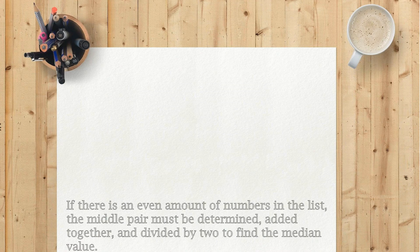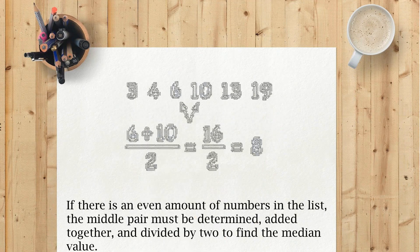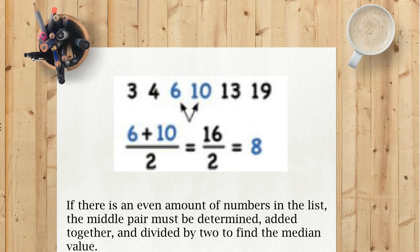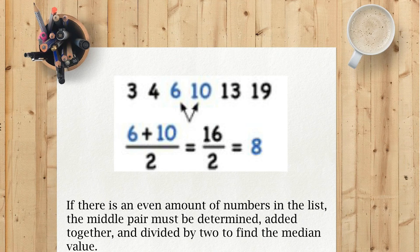If there is an even amount of numbers in the list, the middle pair must be determined, added together, and divided by 2 to find the median value.